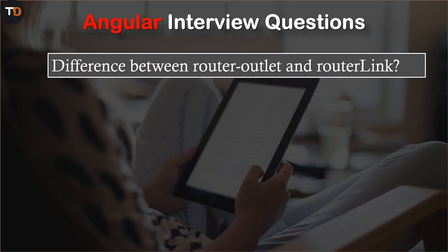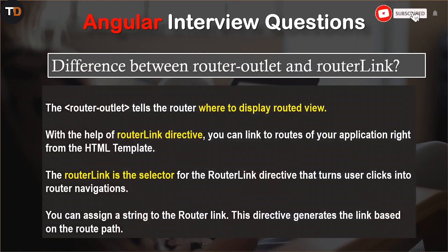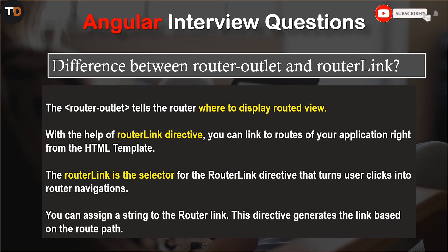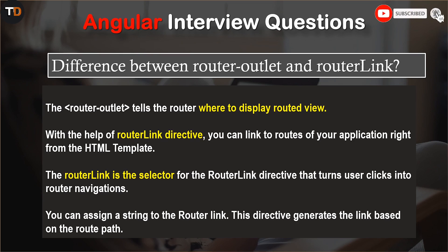Next: the difference between router-outlet and router-link. Router-outlet tells the router where to display the routed view. With the router-link directive you can link the routes of your application right from the HTML template. The router-link is the selector for the router-link directive that turns user clicks into router navigation. You can assign a string to the router-link, and this directive generates the link based on the route path.